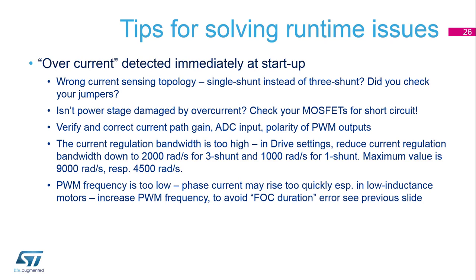There is a filtering parameter for current reading defined by a bandwidth number. The recommendation is that for three-shunt topology it's good to reduce this number to 2000, and for single-shunt to 1000 — this can be useful if you have a quite noisy current reading signal. When the PWM frequency is too low, the phase current may rise too quickly, especially when the motor has very low inductance. In that case, increase the PWM frequency, and to avoid FOC duration faults, increase the FOC execution rate as described previously.